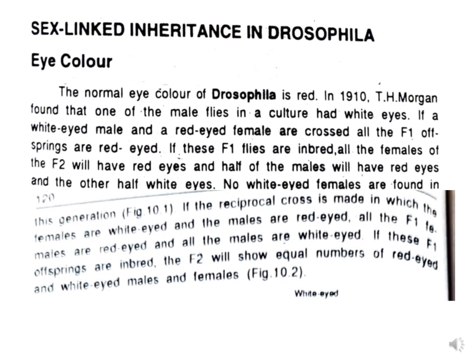When these F1 flies were interbred, all females of F2 had red eyes, and half of the males had red eyes and the other half had white eyes, but no white-eyed females were found. In the reciprocal cross — white-eyed females crossed with red-eyed males — all F1 females were red-eyed and all F1 males were white-eyed. When these F1 offspring were interbred, the F2 showed equal numbers of red-eyed and white-eyed males and females.